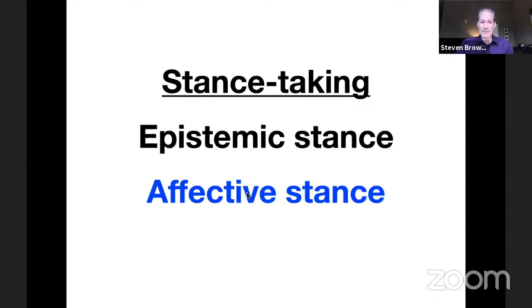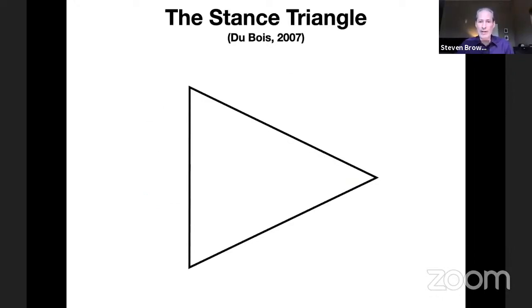This is demonstrated nicely in the work of John Du Bois as the Stance Triangle. Two points of the triangle are two speakers—speaker one and speaker two—and the third point is that thing they're talking about.